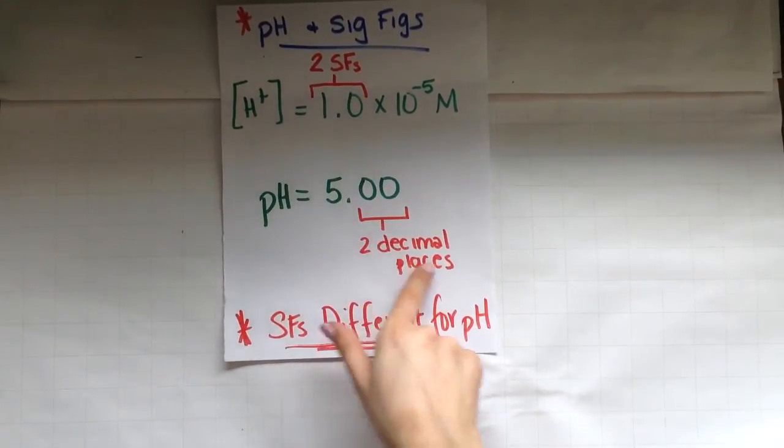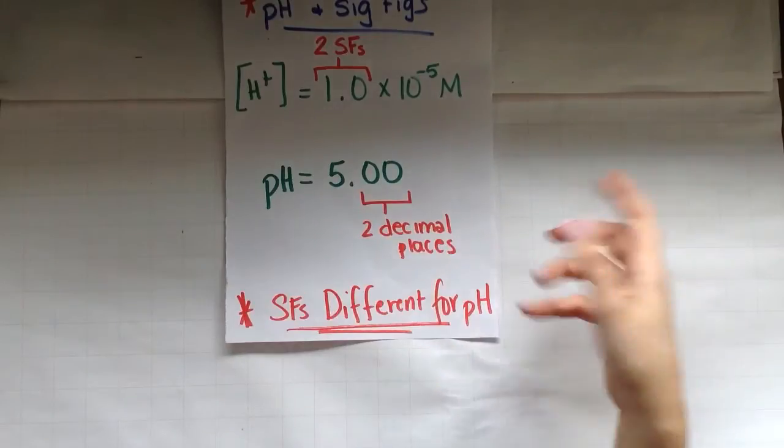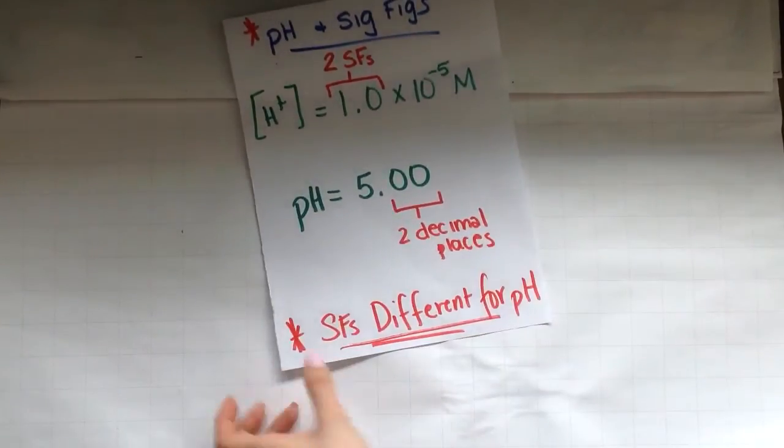So two sig figs means two decimal places. Please recognize this is a very different way to do pH. I mean to do sig figs.